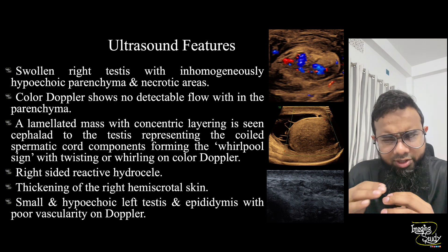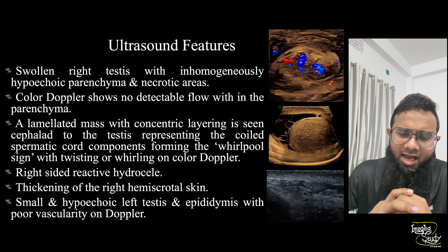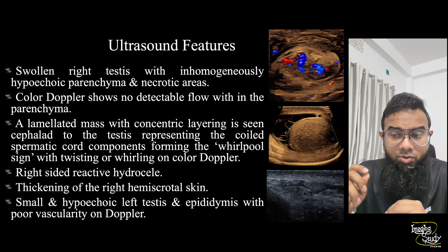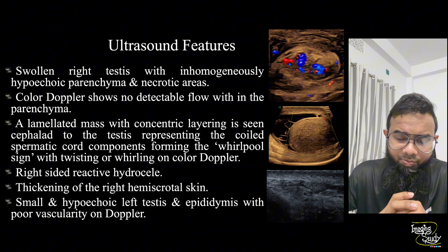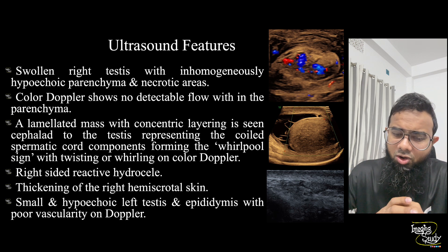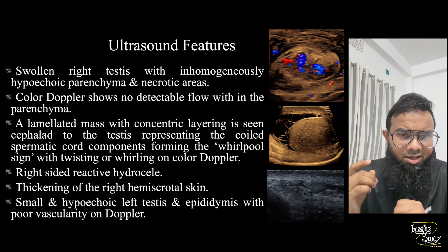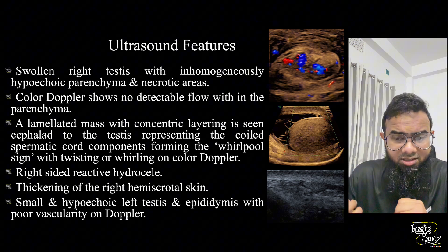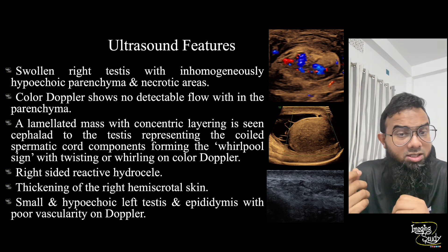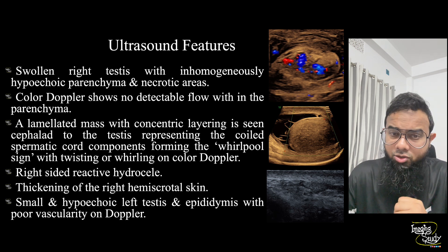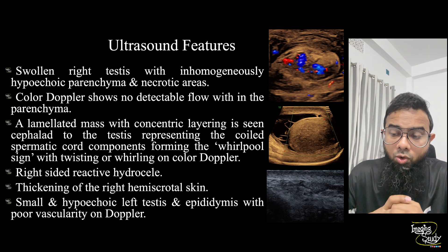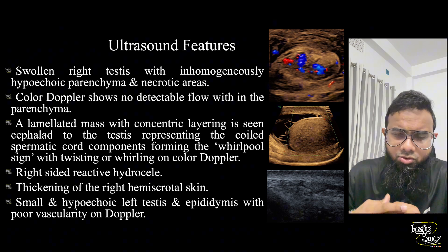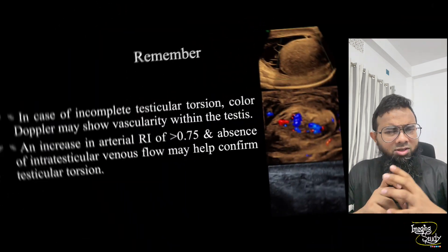The right testes also showed surrounding hydrocele containing thin septations, and the scrotal skin was slightly thickened on the right side. On the left, we found a small hypoechoic left testes with a small epididymis. Color Doppler showed very poor vascularity on that side — consistent with chronic epididymal orchitis on the left.